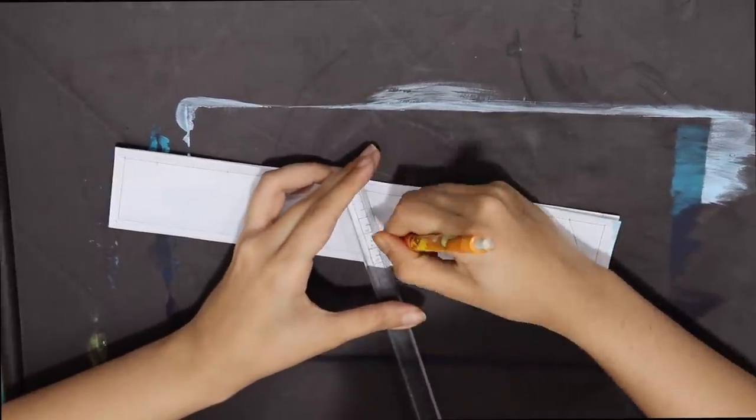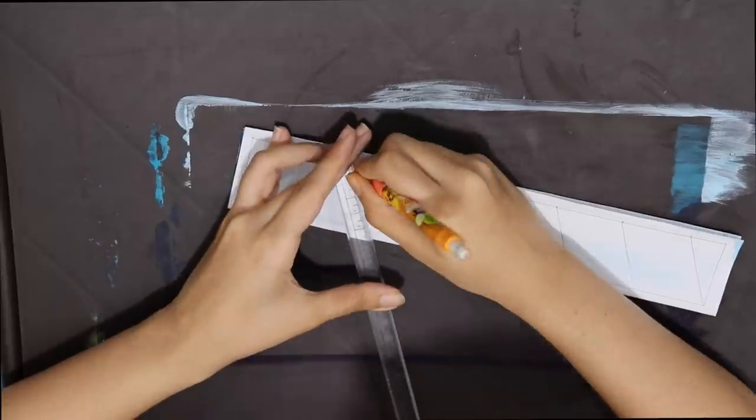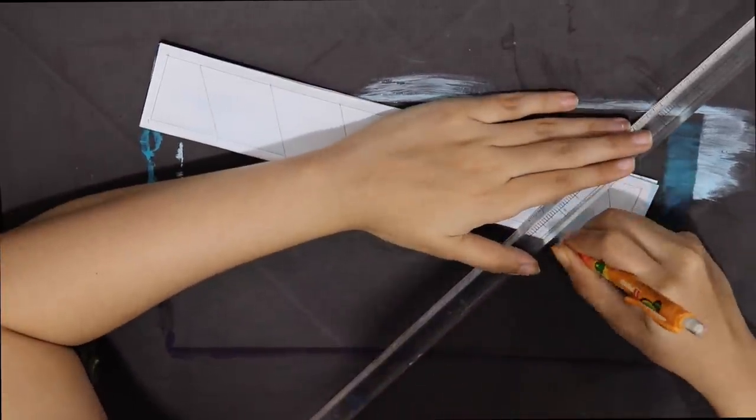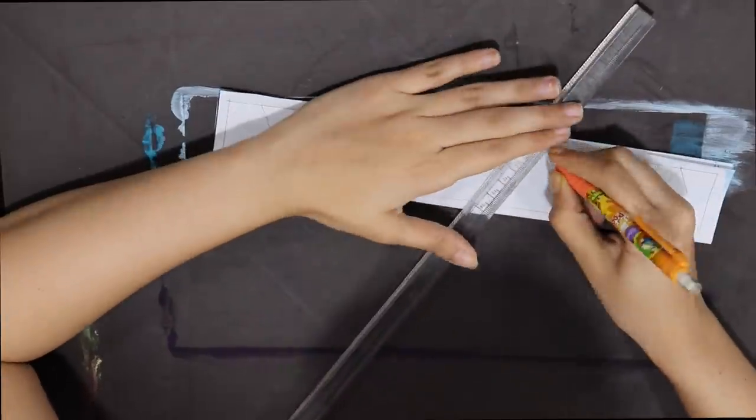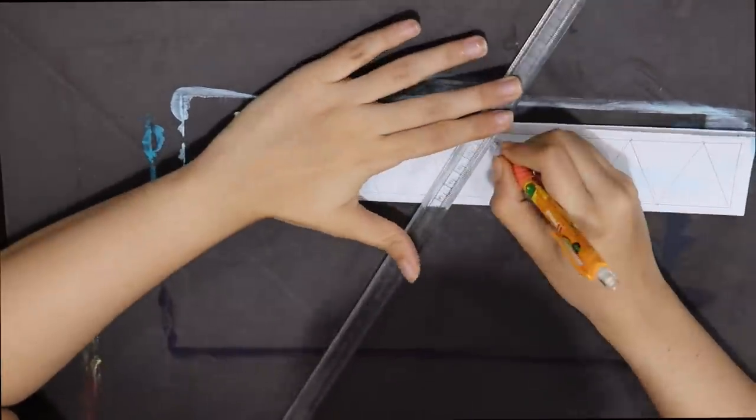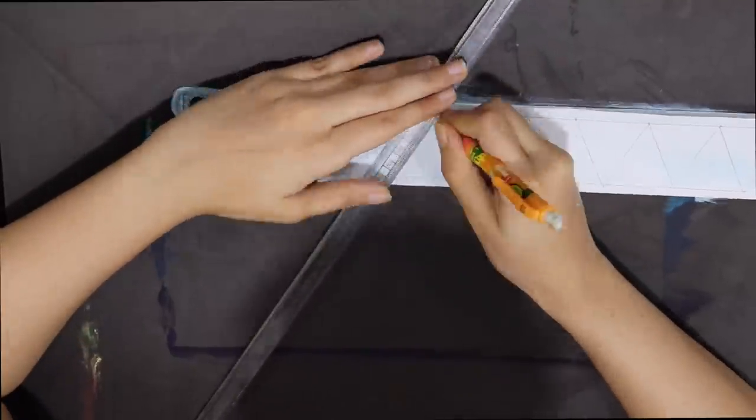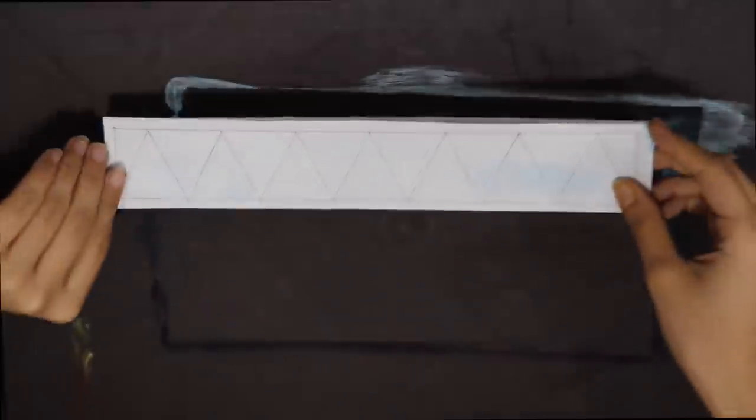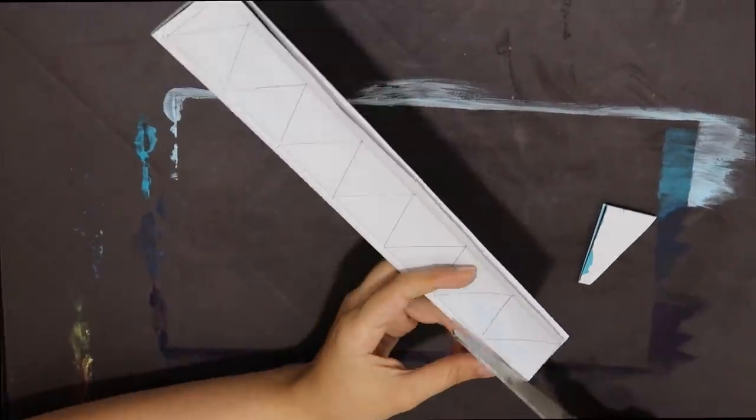We're now going to draw equal number of triangles on this paper like this. And now we will cut all of these. What is the use of this is that you don't have to cut all of them individually - it will be cut four by four.